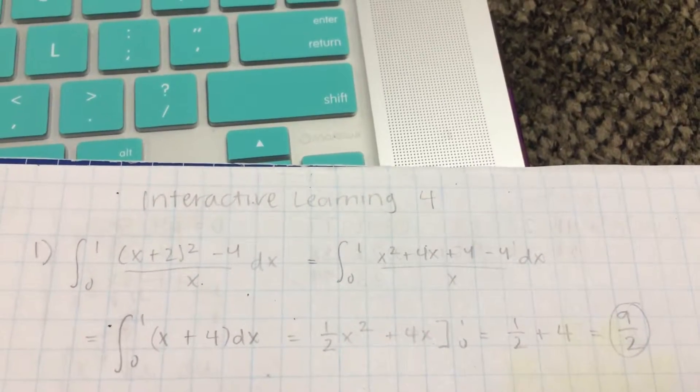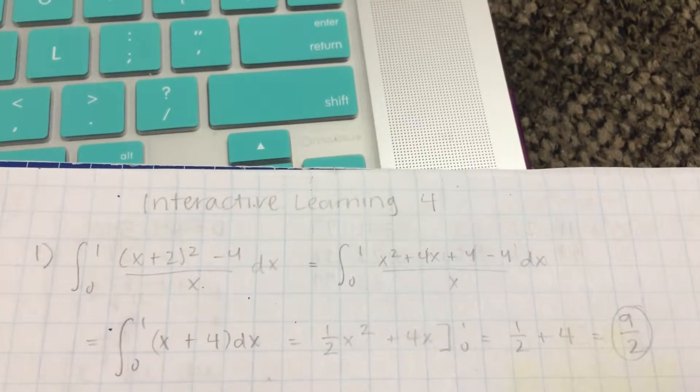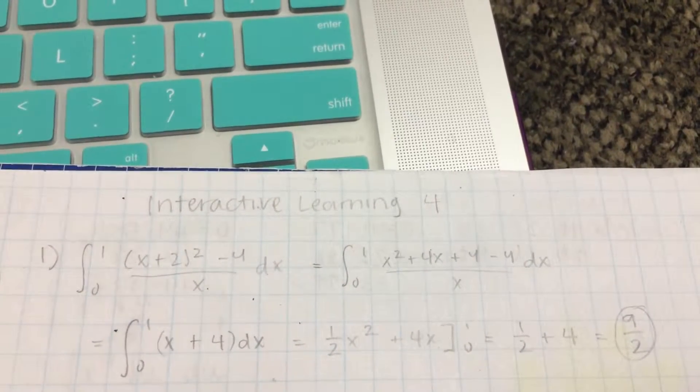So the problem we had to do was the integral from 0 to 1 of (x+2)^2 - 4 over x dx.